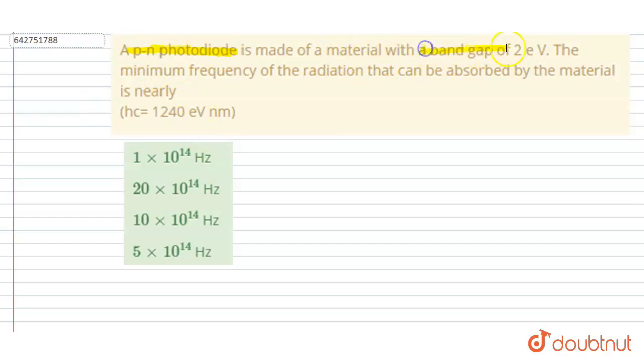...made of material with a band gap of 2 electron volts. The minimum frequency of the radiation that can be absorbed by the material is nearly... So if I talk about the minimum frequency in a PN photodiode...